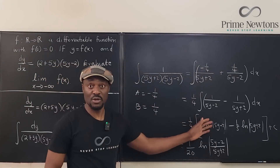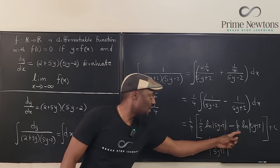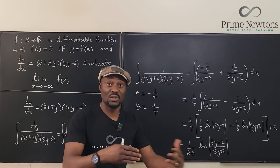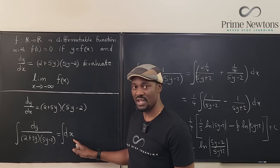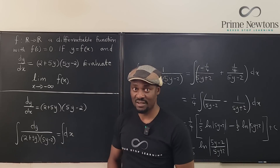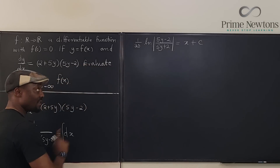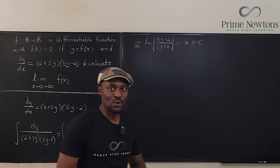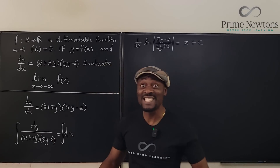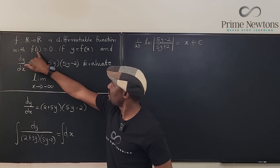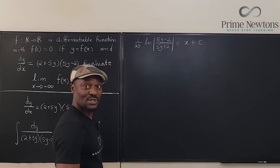Now we need to find what c is. Because it's an initial value problem, they tell us when x equals 0, the function equals 0. So we plug in x = 0 and y = 0. We get (1/20) ln|(5·0 − 2)/(5·0 + 2)| equals 0 + c, which is (1/20) ln|−2/2| equals c.